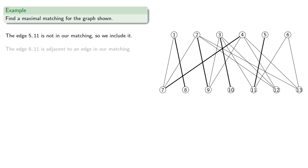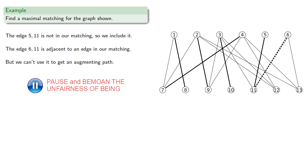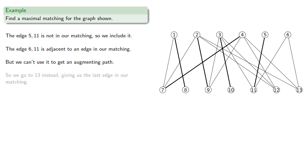The edge 6-11 is adjacent to an edge in our matching, so again, it could be the start of an M-augmenting path. But we can't use it to get an augmenting path because it takes us to 5, and there's no edges away from 5. Again, since it's a depth-first search, going to 11 didn't work, so instead we'll go to 13, and that gives us the last edge in our matching.